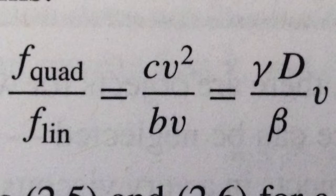To decide which forms of resistance are important, it's useful to take the ratio of the quadratic form to the linear form. So if this ratio is larger than 1, it means the quadratic form dominates. If it's less than 1, it means the linear form dominates. You can see here that the ratio depends on the projectile's diameter, d, and its velocity, v, but it also depends on gamma and beta.